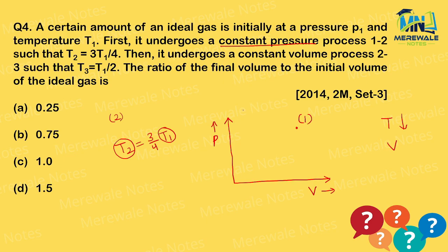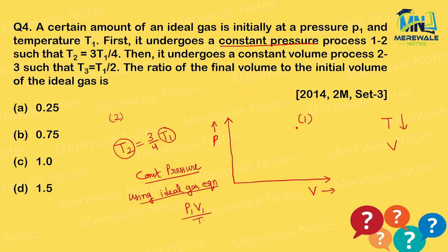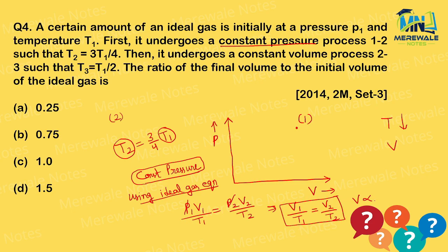After process 1→2 at constant pressure, the gas undergoes a constant volume process from 2 to 3. For this, using the ideal gas equation: P2/T2 = P3/T3. Since V2 = V3 (constant volume), pressure is directly proportional to temperature. As temperature decreases further, pressure also decreases, so the arrow moves downward on the diagram.